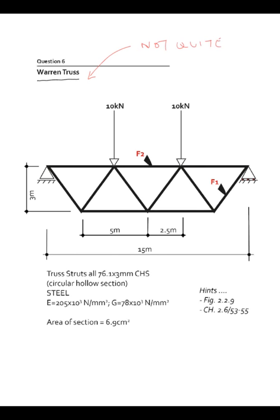Hello, and now we are looking at question six. Just pointing out, it's not quite a Warren truss. The Warren truss has equilateral triangles, but it's close. 10 kN are loading at the third span points, the span is 15m, the depth is 3m.